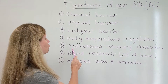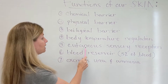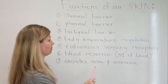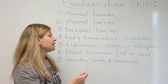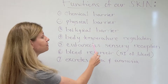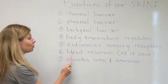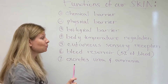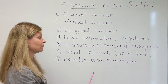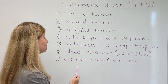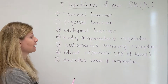Our skin also plays an important role with cutaneous sensory reception — cutaneous meaning skin. It can detect touch, pain, heat, cold, and many other things. Interestingly, our skin is also a blood reservoir — at any one time it's containing 5% of our total body's blood. And last but not least, our skin excretes urea and ammonia.